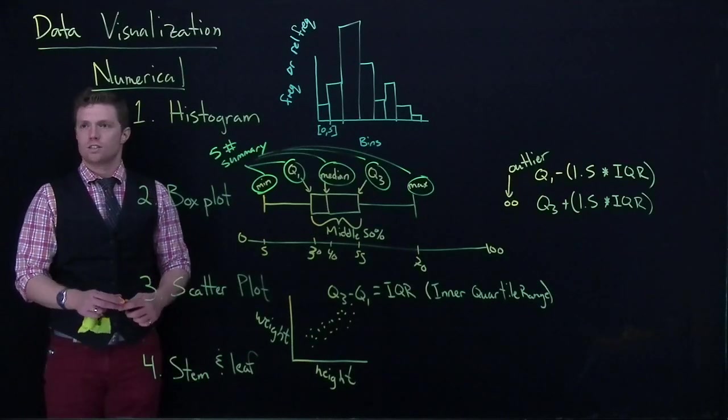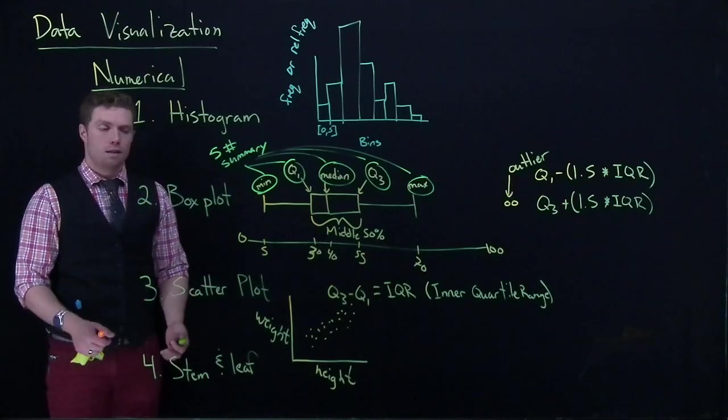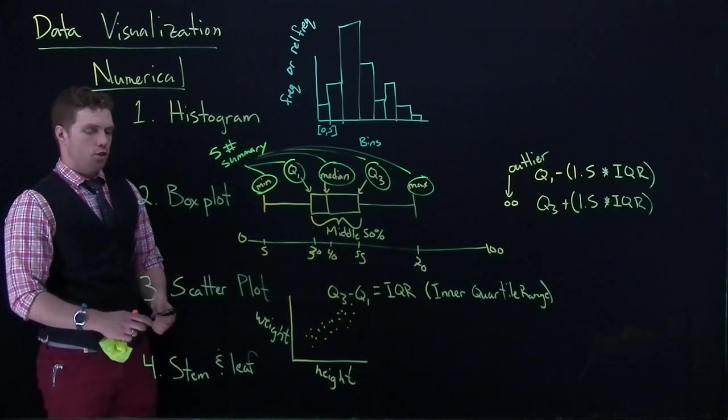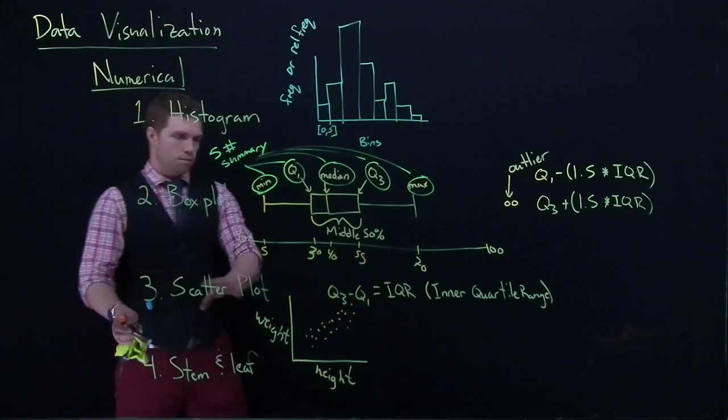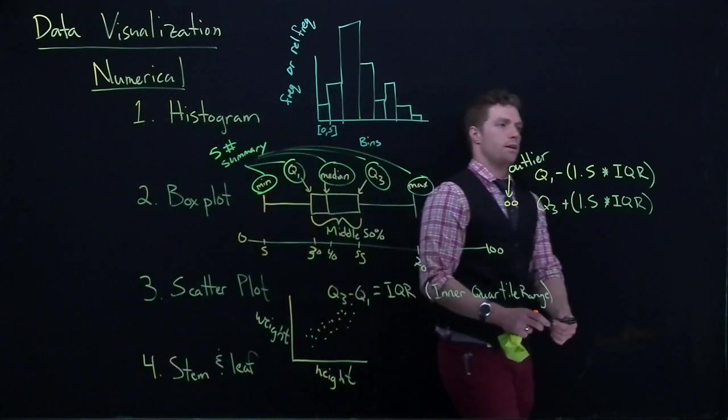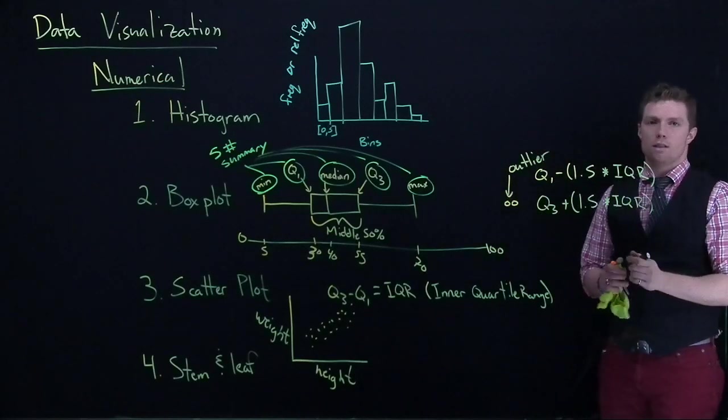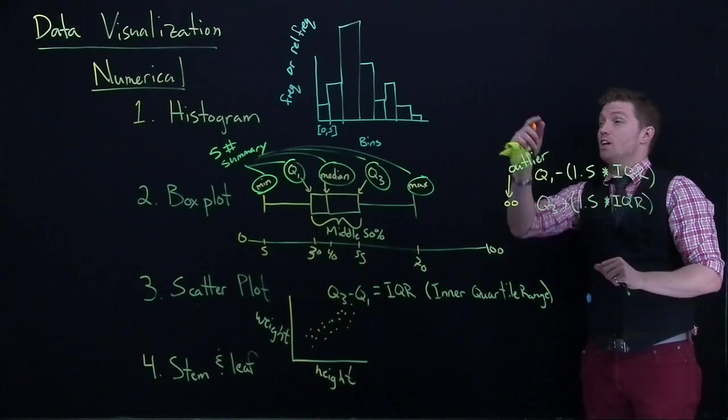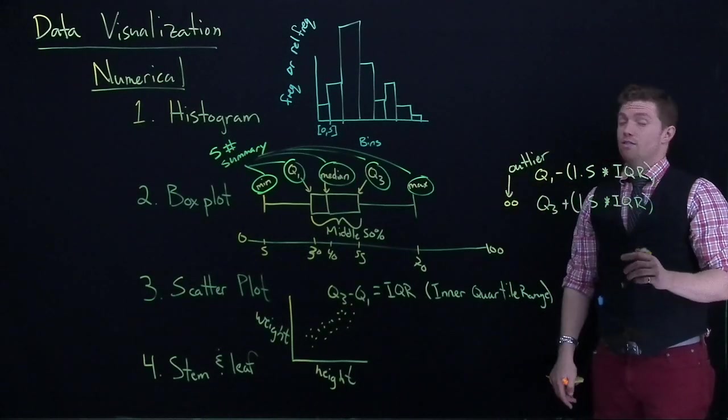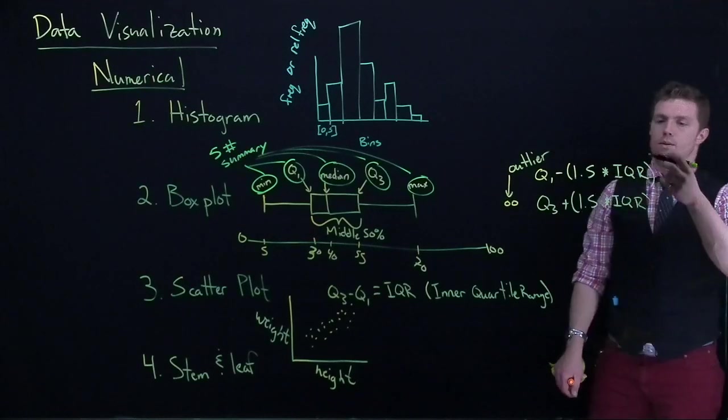Alright, the last one that we have are stem and leaf plots. And as I said before, I don't particularly like stem and leaf plots. But I'm going to put them up just so that we have a reference for them. So, a stem and leaf plot, I'm going to kind of move over here and draw up in this area for a stem and leaf plot. But a stem and leaf plot is kind of, it's another graphical representation of our histograms, kind of. And just, let me give you an example.